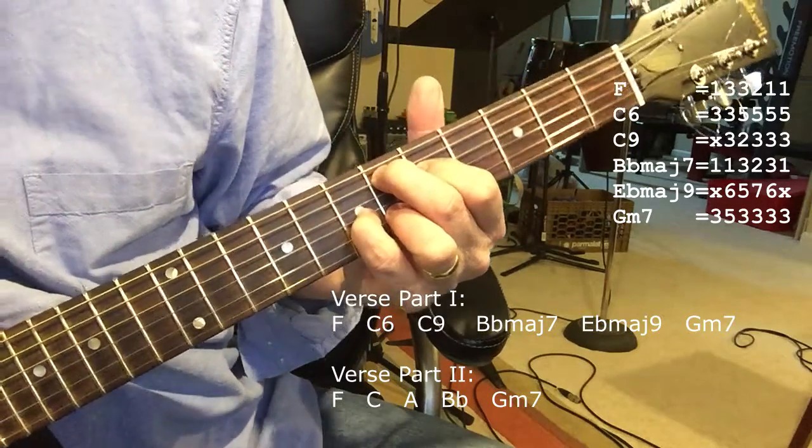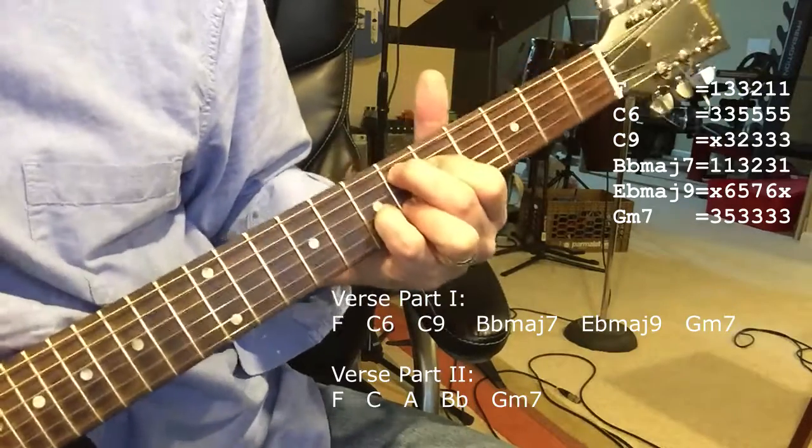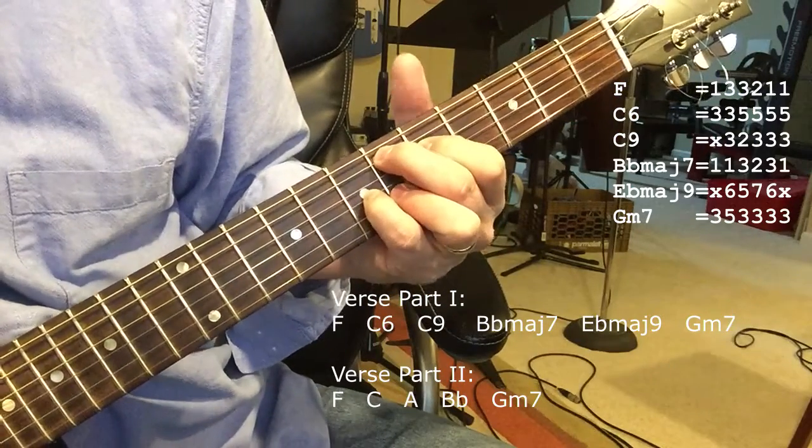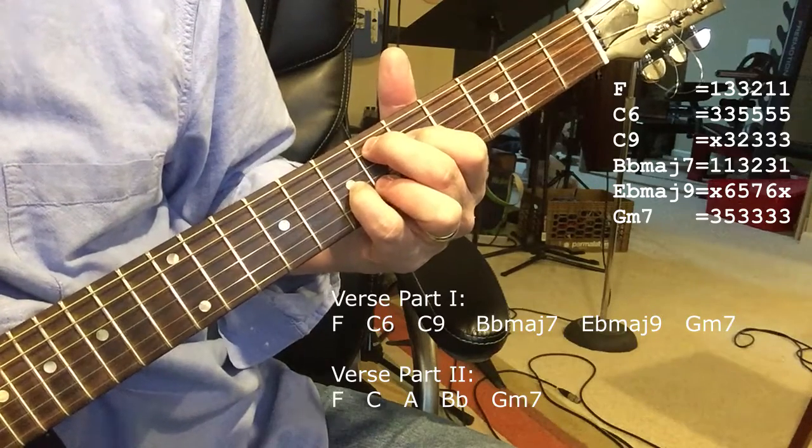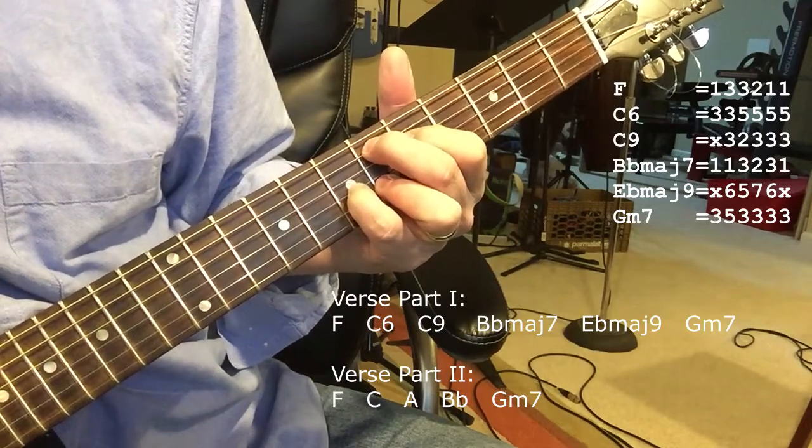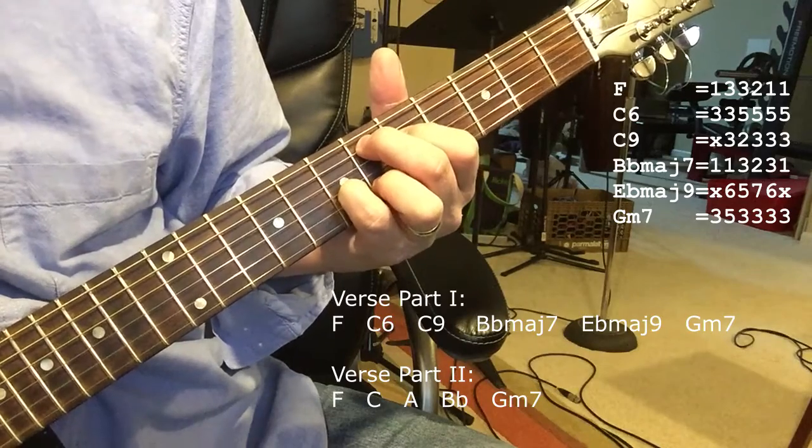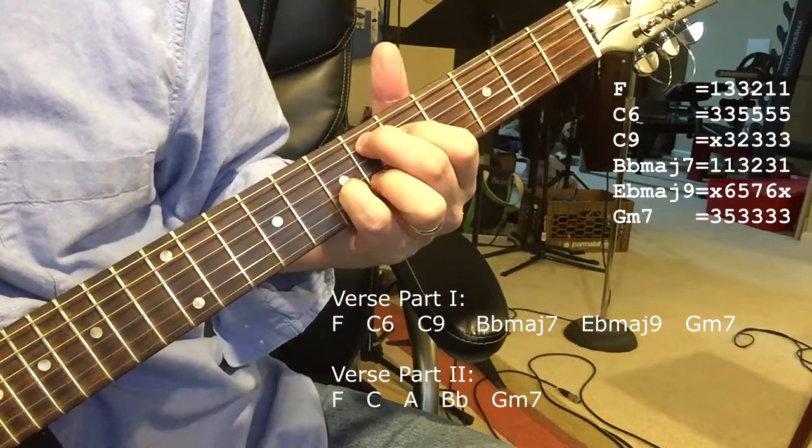Kind of a haunting chord. You're really just playing those four strings that you're fretting. And starting from the A string, you're fretting the 6th, the 5th fret, the 7th fret, and the 6th fret.